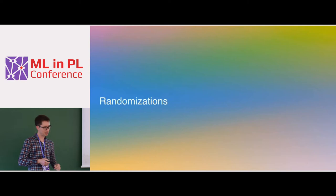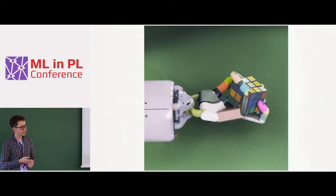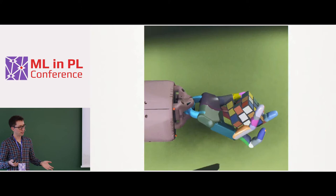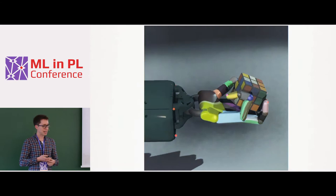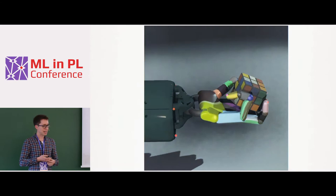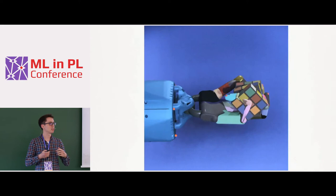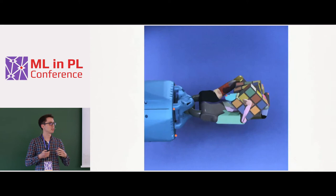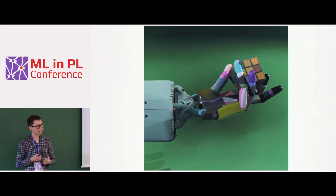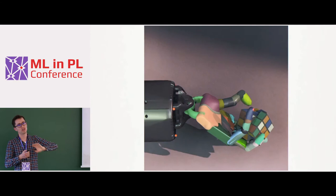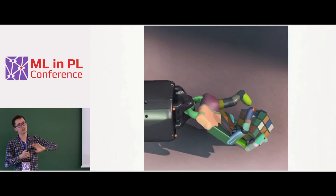I'll now briefly describe the randomizations used. For visual randomizations, we use images from our randomized simulator rendered in Unity 3D. We randomize things like colors, lighting, camera position, material properties, and add distortion operations. All these randomization properties are controlled with ADR — one dimension of lambda controls color saturation, another controls the magnitude of Gaussian noise added to the image. The vision model is trained with supervised learning using these simulated images, with no real images used for training.